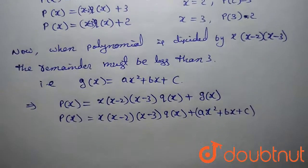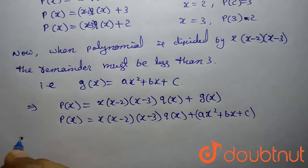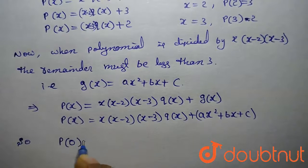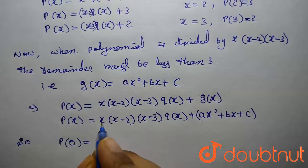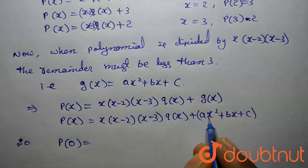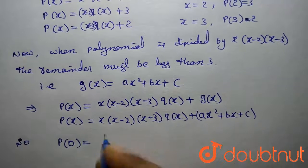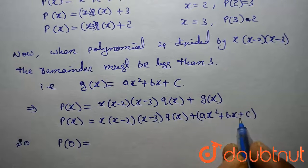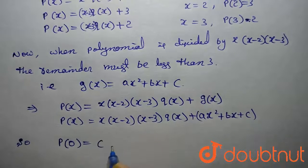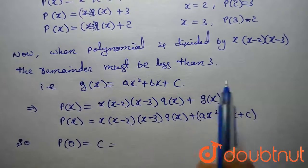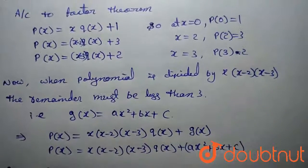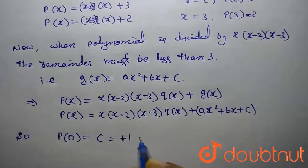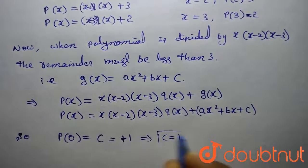This is g(x). Now at x = 0, p(0) = 0 into anything = 0. If we substitute 0 in these terms, a·0 = 0 and b·0 = 0, and we are left with c. We already know that p(0) = 1. Therefore the value of c is 1, that is c = 1.